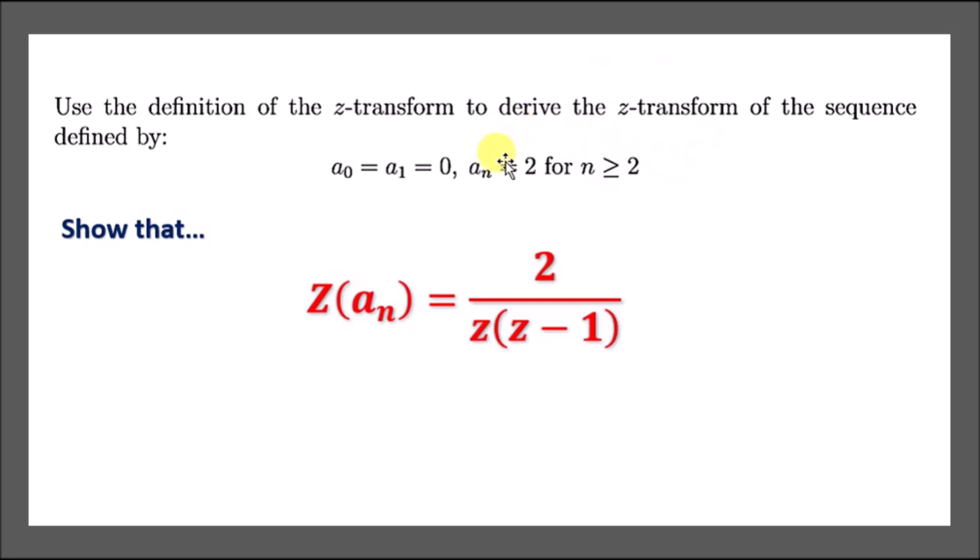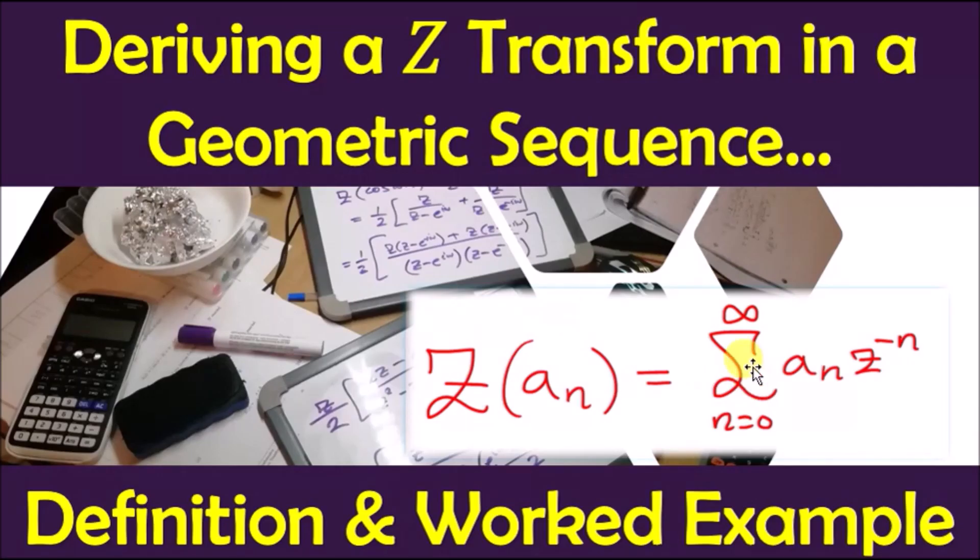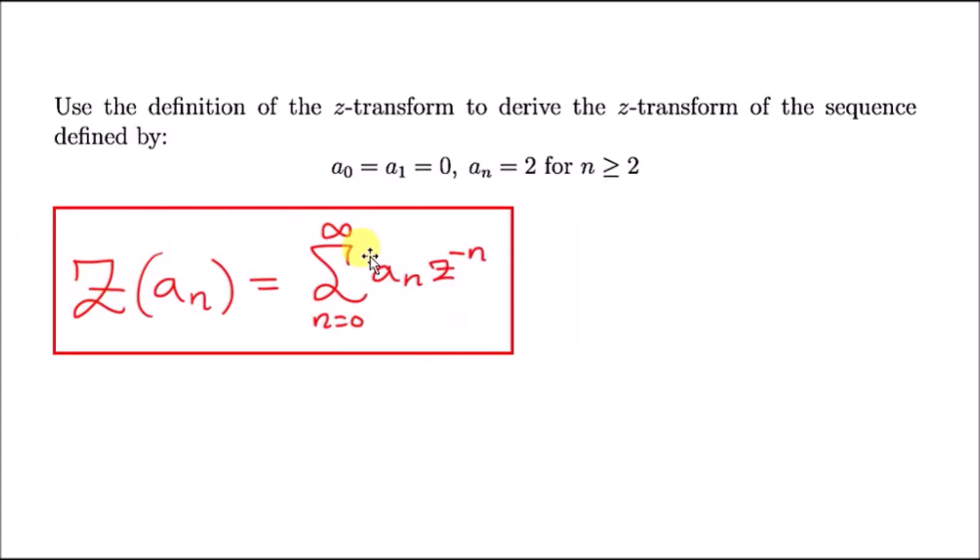The proof is that we're going to show that this sequence can be Z-transformed into something very simple. First things first, let's write down the definition. We saw in the previous page it's this one, so we can just put it right here. It's an infinite sum.